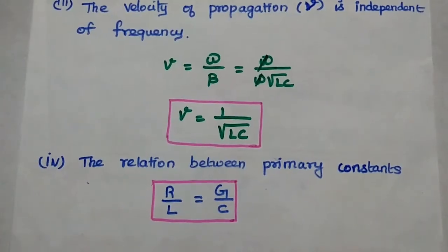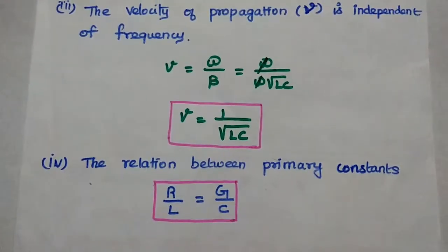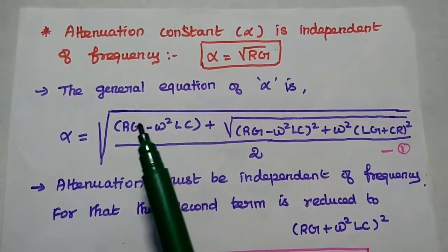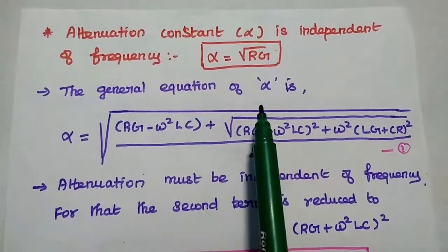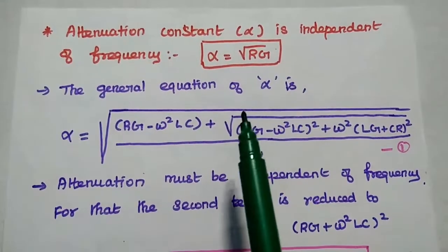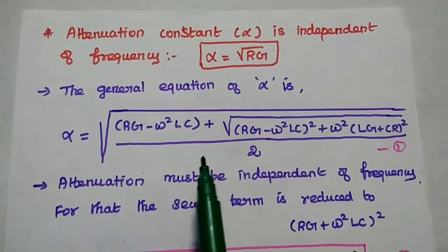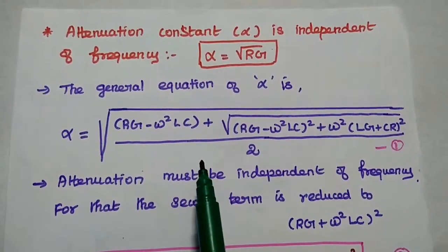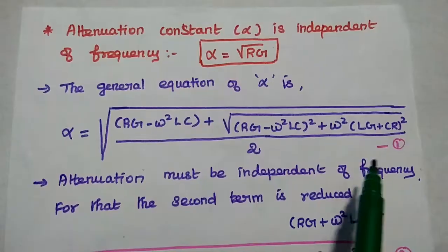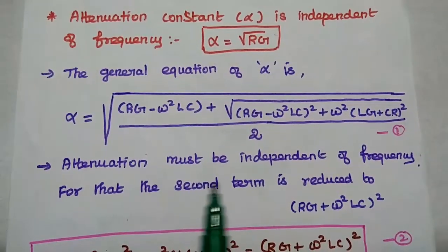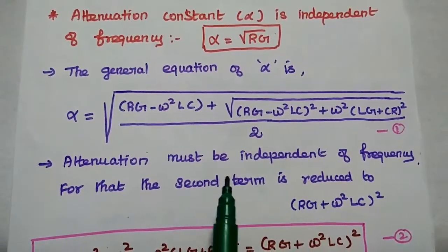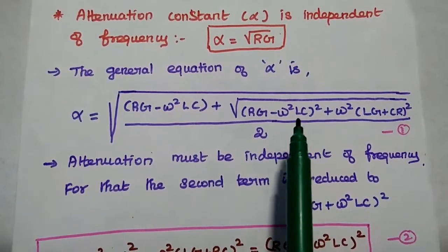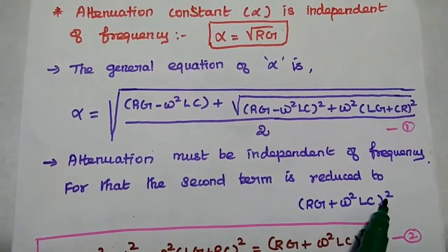Next we are going to prove each condition with its derivation. First, we are going to derive that the attenuation constant is independent of frequency. We consider the general equation of attenuation constant of the transmission line, already derived in the previous lecture. We are going to directly use that expression. Attenuation must be independent of frequency for a distortionless line. For that condition, the second term of this expression is reduced to rg plus omega squared lc, the whole square.